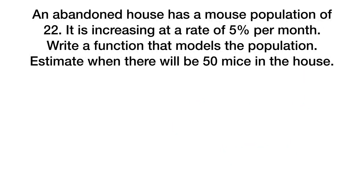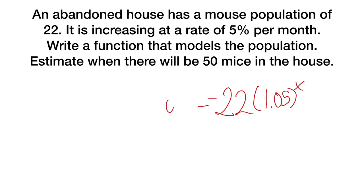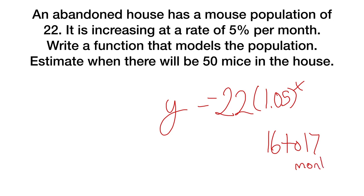An abandoned house has a mouse problem of twenty-two mice. It is increasing at a rate of five percent per month. We write a function: 22 times 1.05 to the x — that's five percent more than one. We want to know when the population equals fifty. Using a table in the calculator, we find that right around sixteen to seventeen months is when it hits fifty, because it's only a little over fifty at seventeen months.